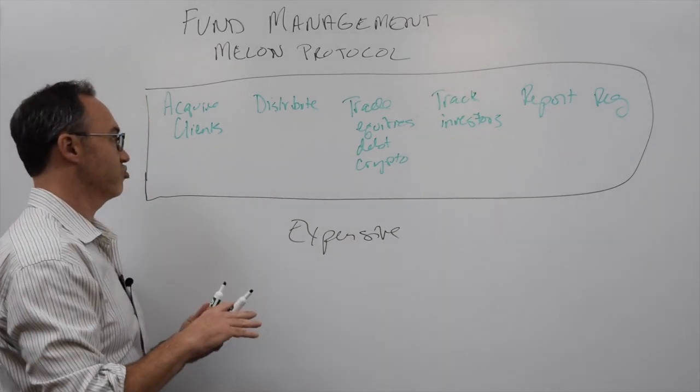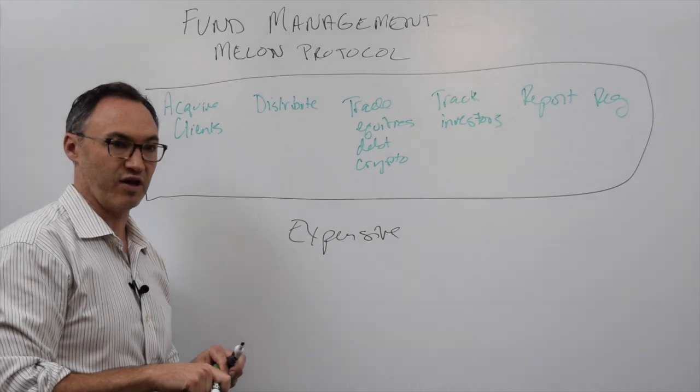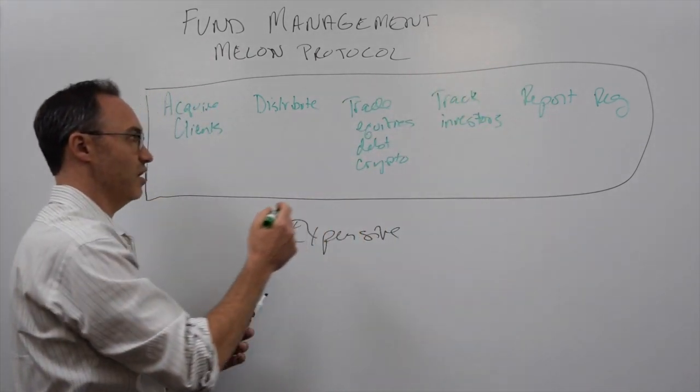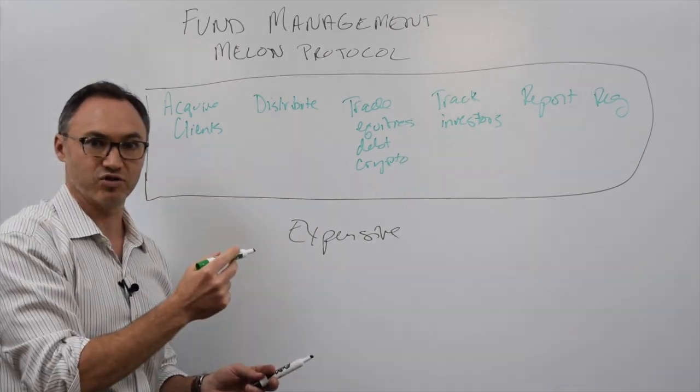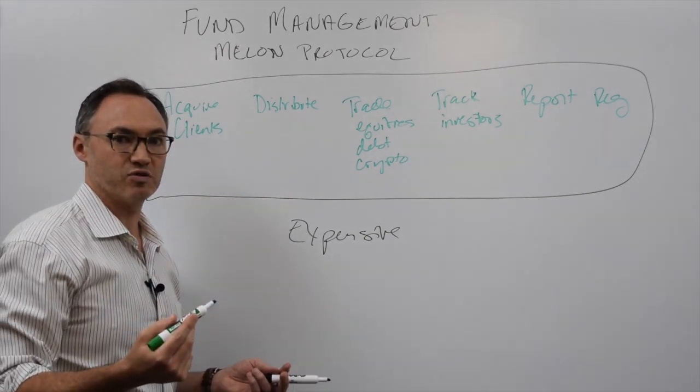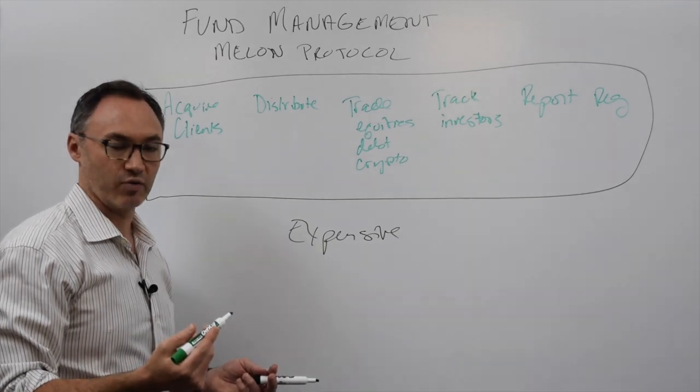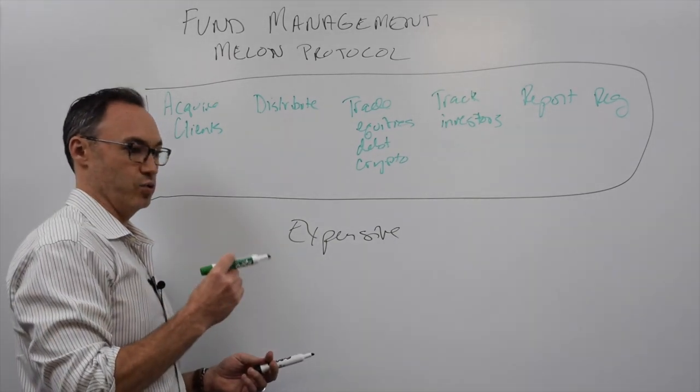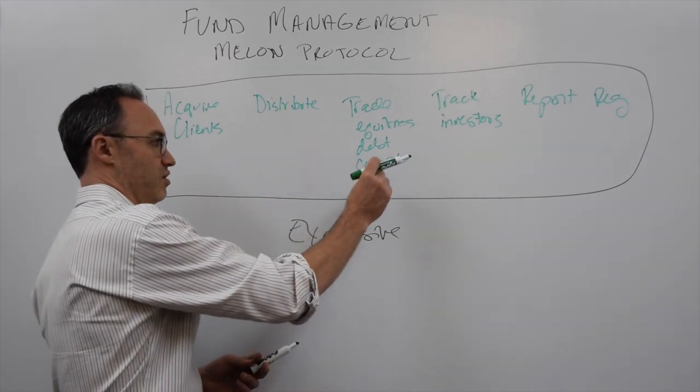And then the distribution and the acquiring clients. Well, part of that is if I don't have to spend money on all this necessarily, I can put my money more towards acquiring clients and distribution, but eventually there should be some sort of digital distribution anyway. It should be relatively simple for me as an advisor to look at the track record and the ability of this particular fund and go, oh, well, I definitely want my clients in that.